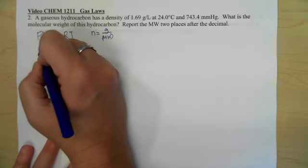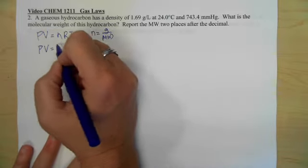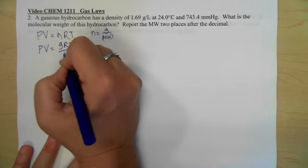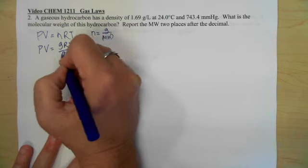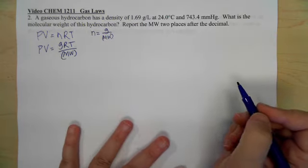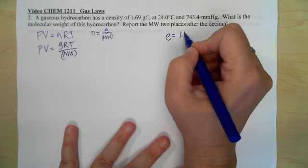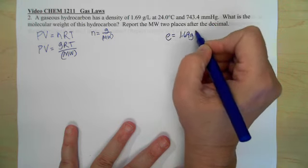So if we substitute in we get PV is equal to grams RT over molecular weight. So if we go off to the side here, we know that we have a density which is rho of 1.69 grams per liter.